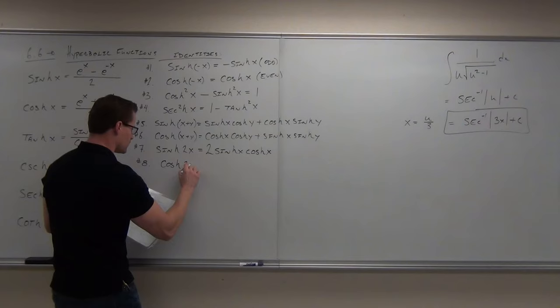We're going to prove identity number seven — sinh(2x) = 2 sinh(x) cosh(x). The way you prove these: start on one side and work it to the other. Starting with cinch of 2x: since sinh(x) = (e^x - e^(-x))/2, sinh(2x) = (e^(2x) - e^(-2x))/2.